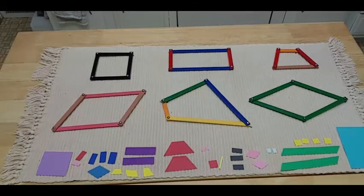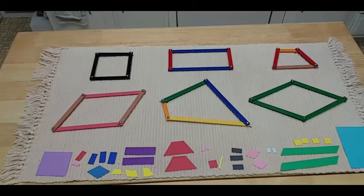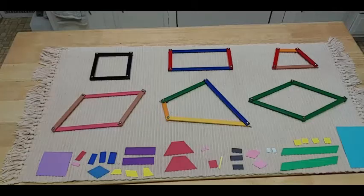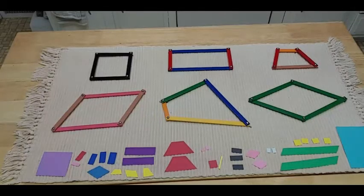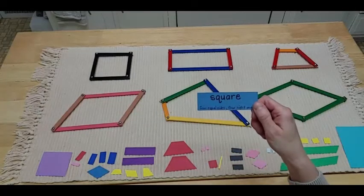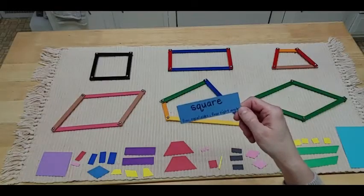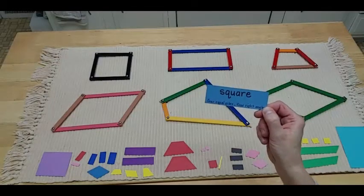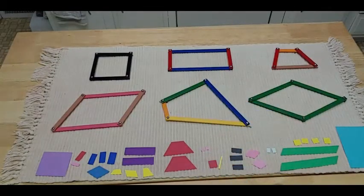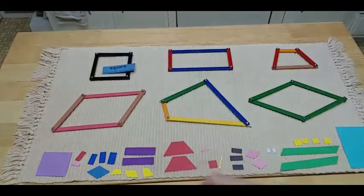So, let's get started labeling all of our different quadrilaterals. The first one I have is an easy one. It's a square. A square has four equal sides and four right angles. There is my square.